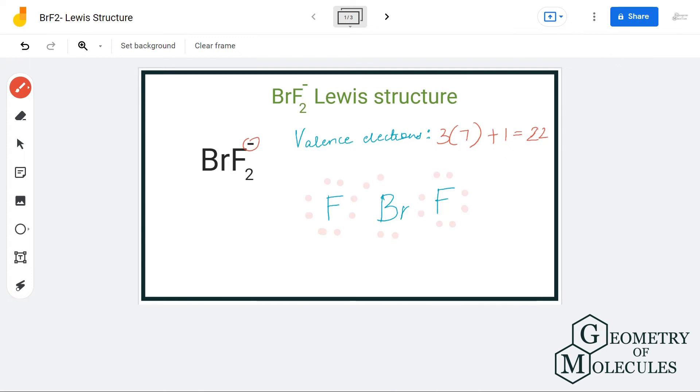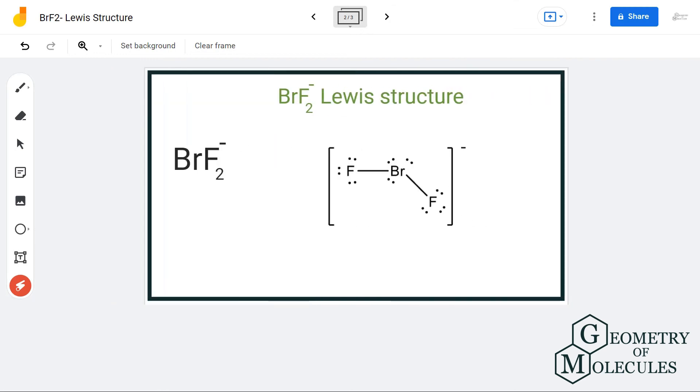Now you might wonder where we will place these two valence electrons. The answer is we will place them on this bromine atom. If you're aware of it, bromine atom can actually have expanded octets and can accommodate more than 8 valence electrons in its outer shell, and hence these electrons will be placed on the bromine atom.